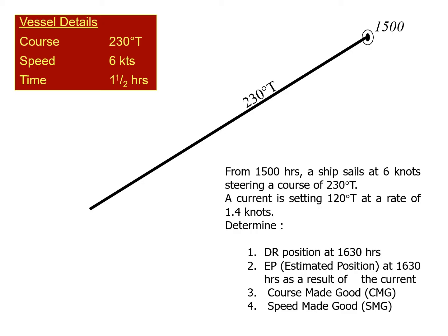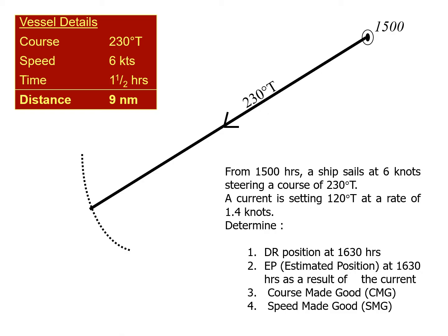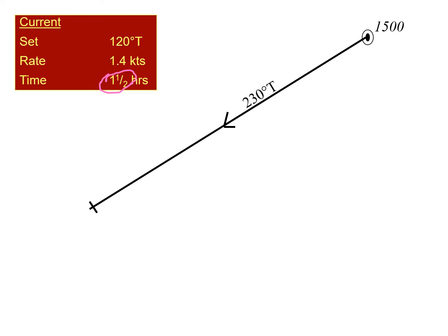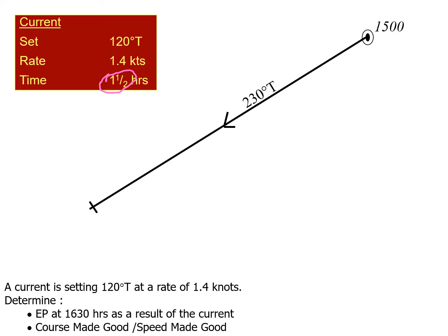Measure nine nautical miles on your compass and draw it like an arc of a position circle — that is the course to be steered. Where the arc and the course-to-steer line intersect is the dead reckoning position, denoted by a cross or plus sign. Also given in the question is that a current is setting 120 degrees true at a rate of 1.4 knots, and you have to determine the estimated position, which takes into account the effect of the current and is more accurate than the dead reckoning position.